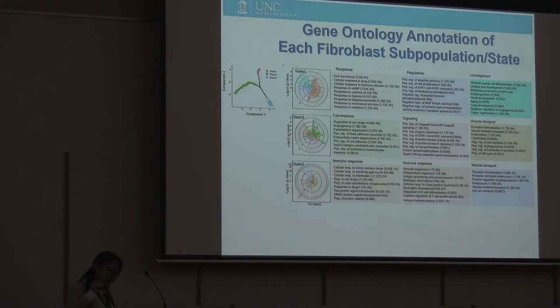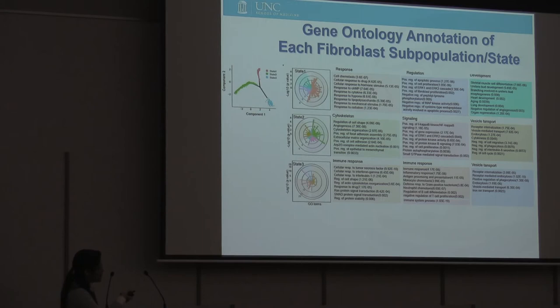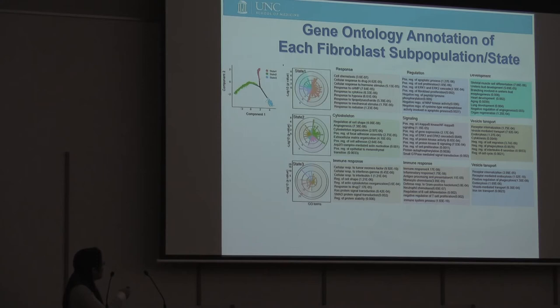The three states correlate back to the three sub-populations of fibroblasts. Most interestingly, now that we have this trajectory, we can do GO term analysis based on the trajectory. The three states corresponding to the three sub-populations can be characterized by their functions. The first state is enriched in GO terms of cellular response — cellular response to chemotaxis, to drugs, to stimuli, to hypoxia. The second state is really related to cytoskeleton — extracellular matrix organization, focal adhesion, cytoskeleton organization.